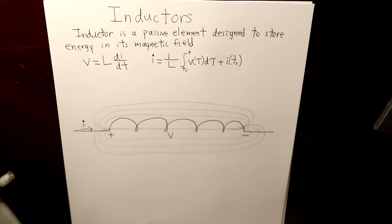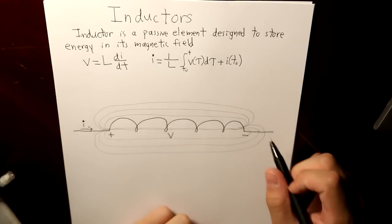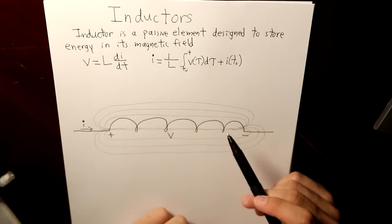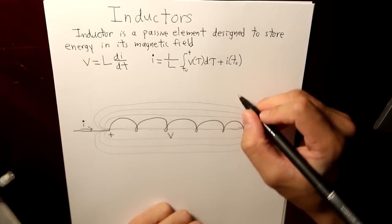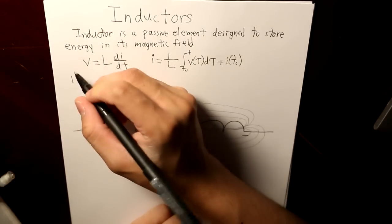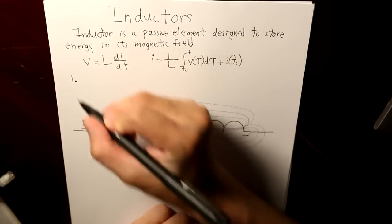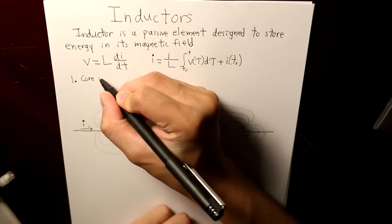Now, the question is, what defines inductance? What are the characteristics, or specifically, the physical characteristics that define inductance? Well, there are four properties. The first property is the type of material the coil consists. The first characteristic is the core material.